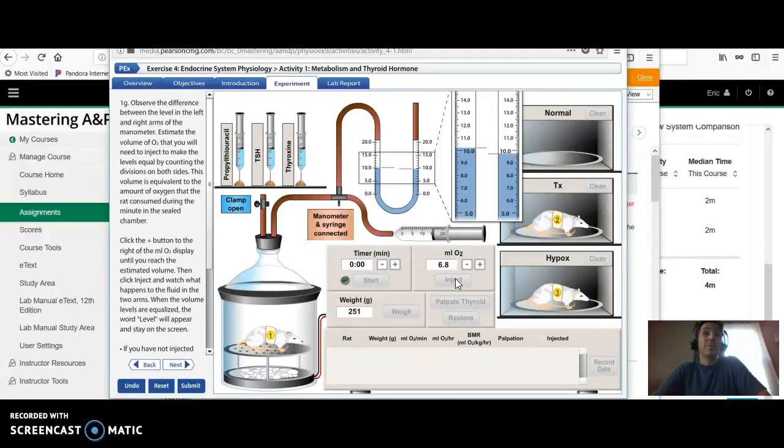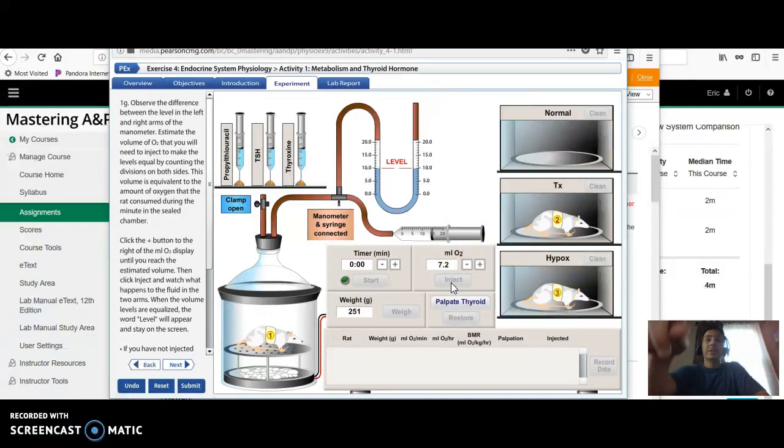And then it tries to level out the two red lines there. If you inject too much, you just start over. If you don't inject enough, you just inject a little more and then try again and inject a little more and then try again. And a little more until it says level like that. So now you know your rat has consumed 7.2 milliliters of oxygen.